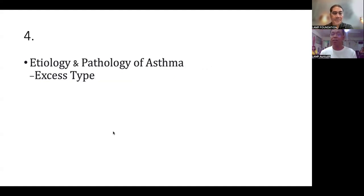Okay. Now, let's talk about asthma, the excess type. Can you tell us the etiology and pathology? Excess type of asthma, like phlegm heat obstruction in the lung, that could disrupt the lung function in dispersing and descending of the chi.